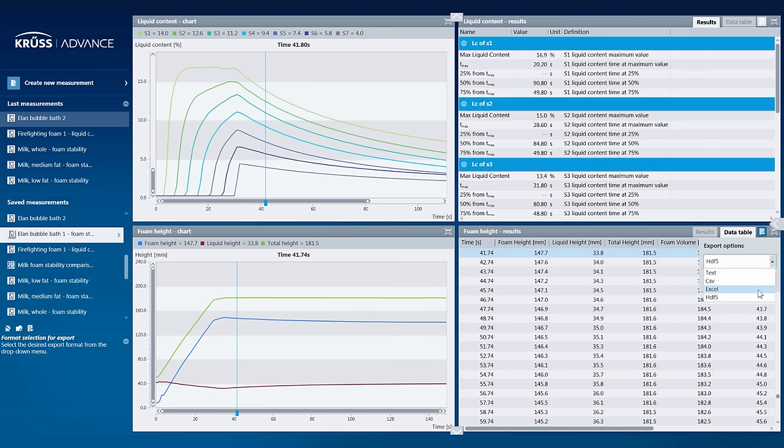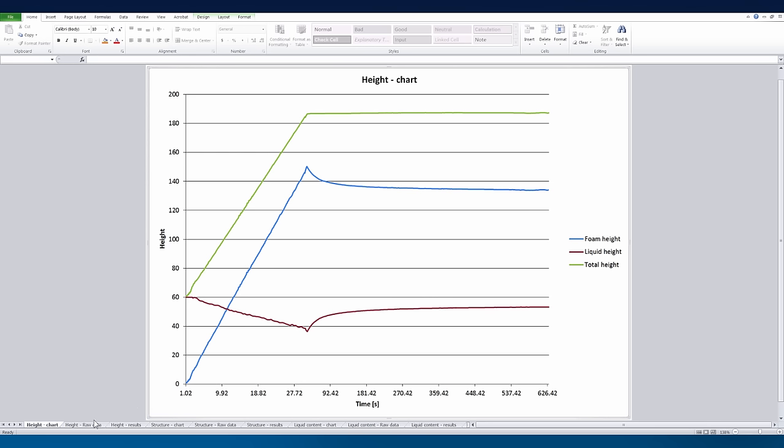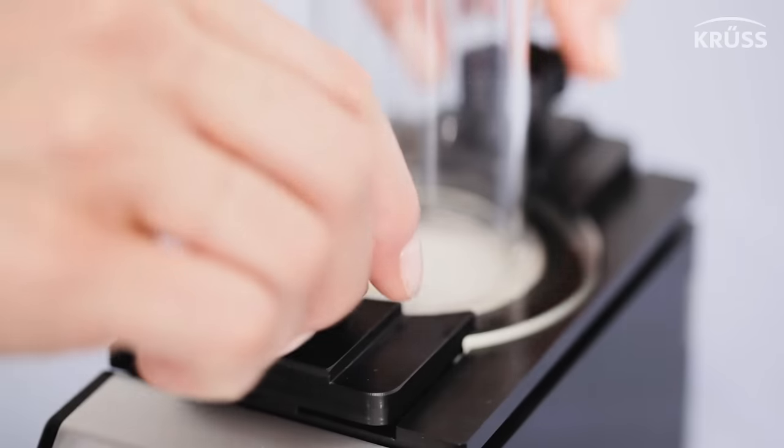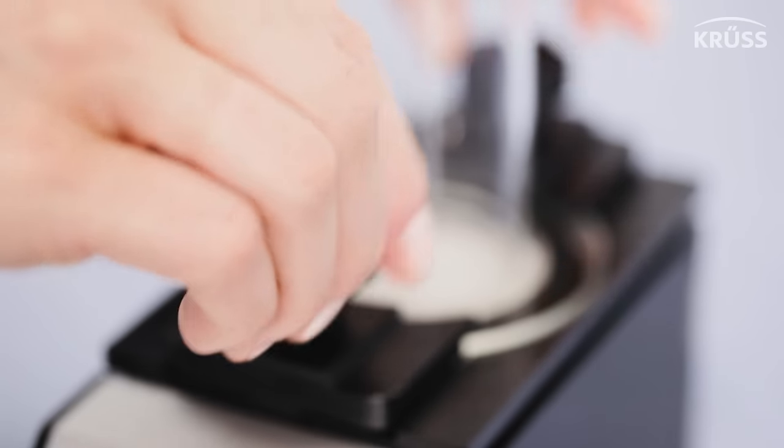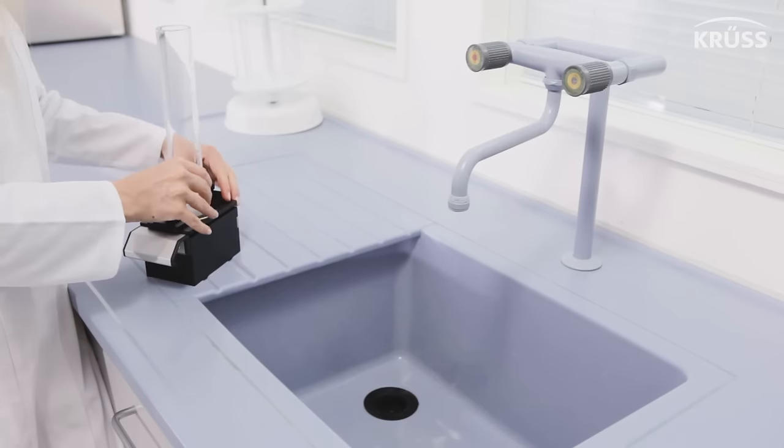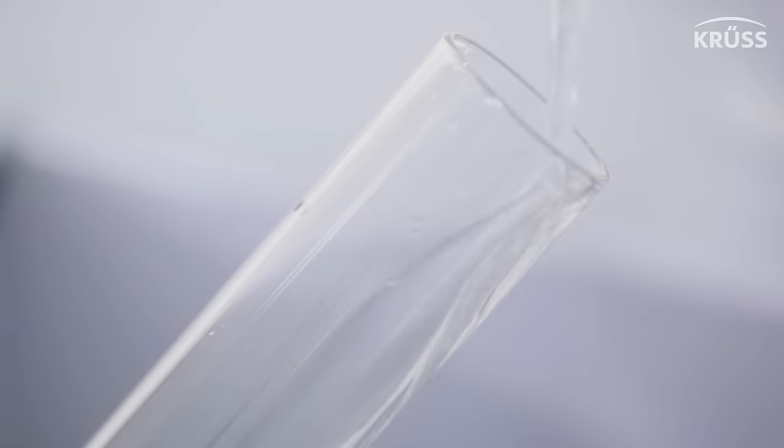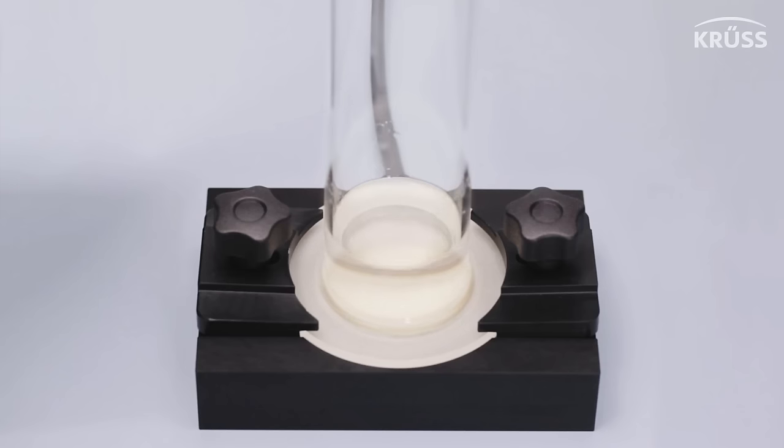If desired, even the raw data from the sensors can be saved. Once a measurement is finished, the DFA 100 can easily be cleaned. The measurement chamber can be completely removed from the system in seconds, and for the filter plates, we have a special vacuum cleaning device.